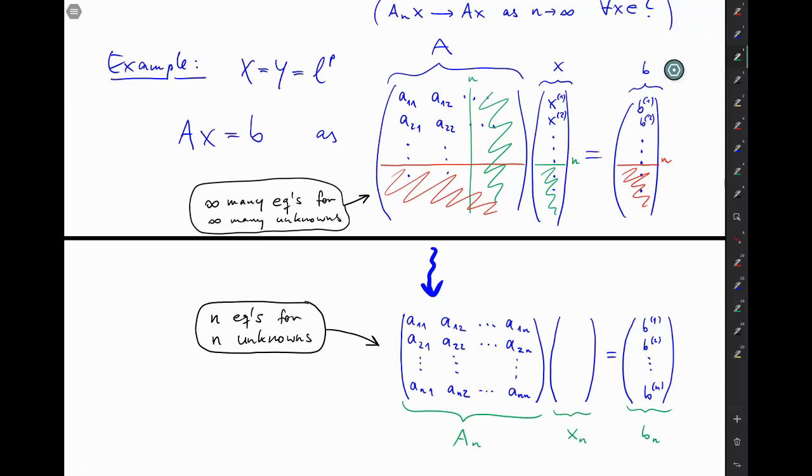But of course the n unknowns solving these n equalities here will in general not be the same as the first n of infinitely many unknowns solving these infinitely many equations.